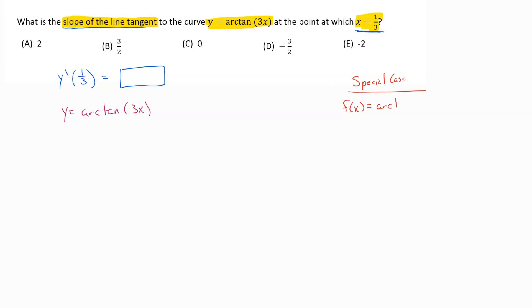So if f of x equals the arc tangent of x, the derivative of the arc tangent of x is one over one plus x squared.